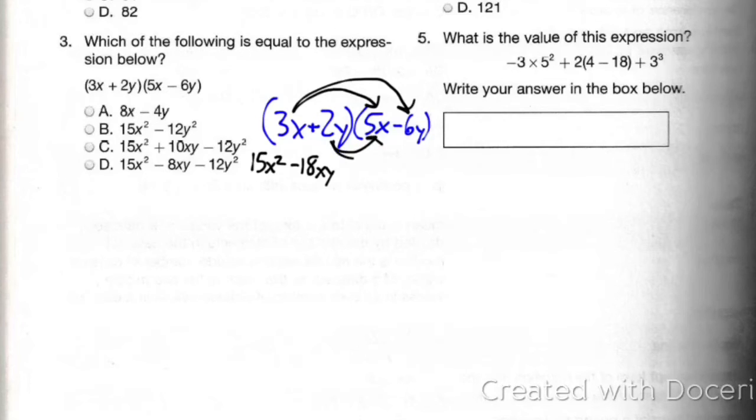Now I'm going to multiply 2y times 5x and 2y times negative 6y. So I get a positive 10, and I'm going to switch this around, xy. And I get a negative 12y squared.